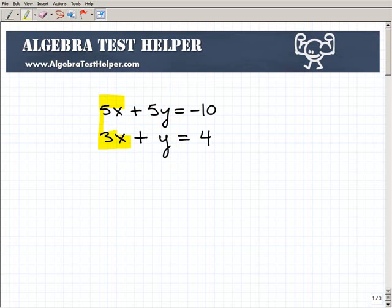When you don't have two opposite pairs, what you have to do is say, all right, how can I create two opposite pairs? So if I look at the x's and I look at my y's, I'm saying which would be the easier variable to create an opposite pair?